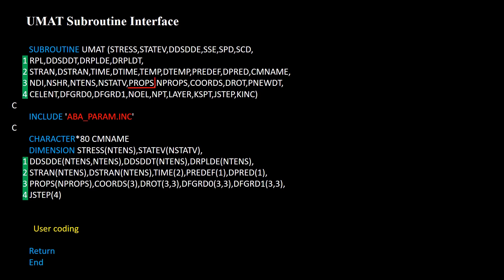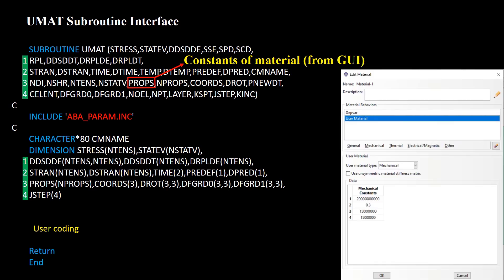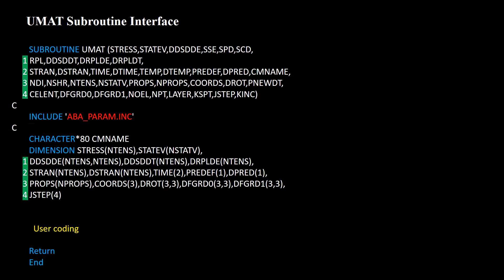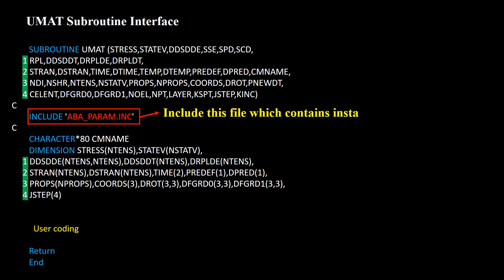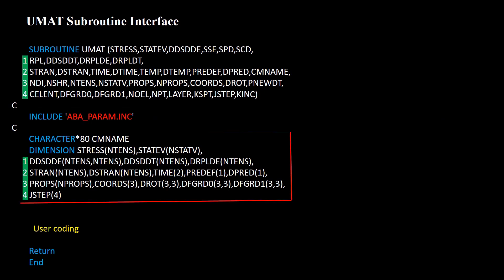The next variable brings material constants defined in the GUI to the UMAT via the PROPS array. A key statement tells the Abaqus execution procedure to include a file that was installed during Abaqus installation and contains important installation parameters — this line is necessary in all UMATs. The next part of the interface defines the types and dimensions of variables.